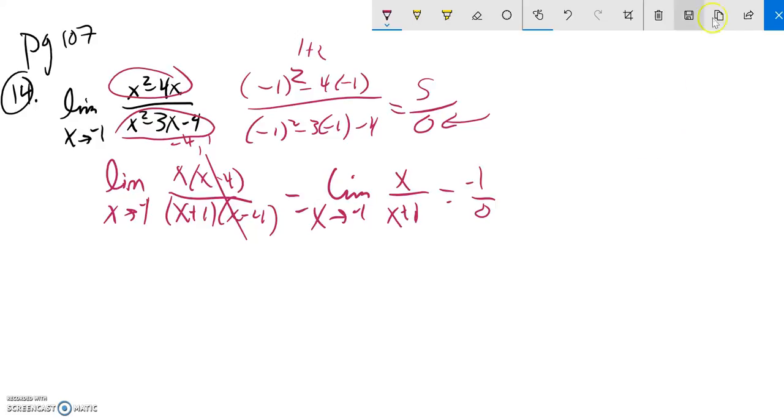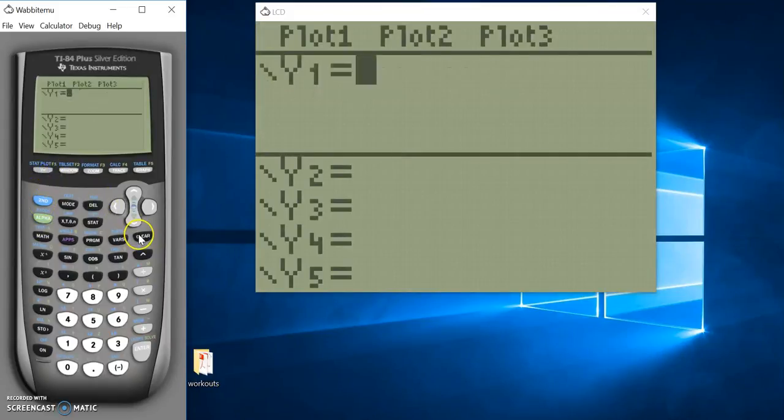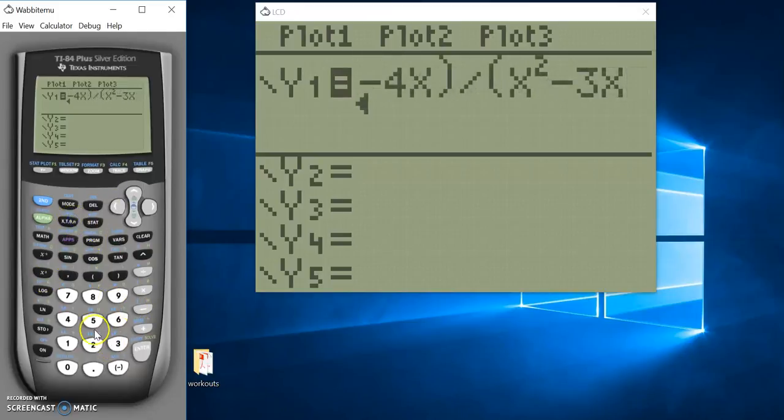I suspect it doesn't exist. Let me see if I can confirm that on my calculator. So I'm going to enter in that equation. x squared minus 4x. We'll close off those parentheses. Divide by that denominator, which was x squared minus 3x minus 4.